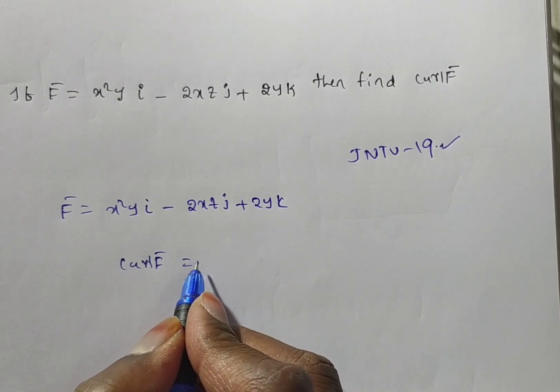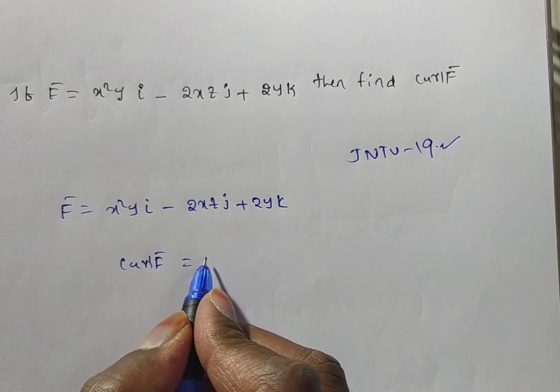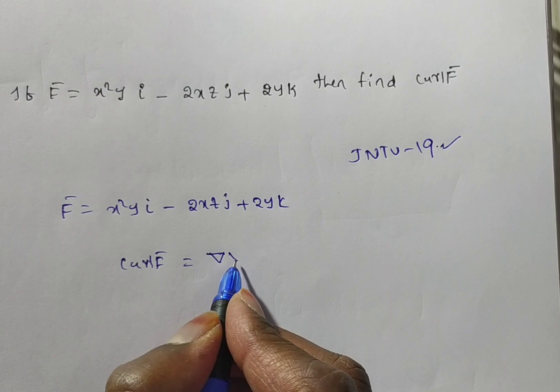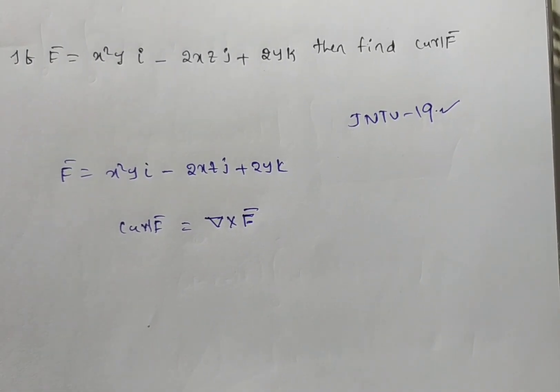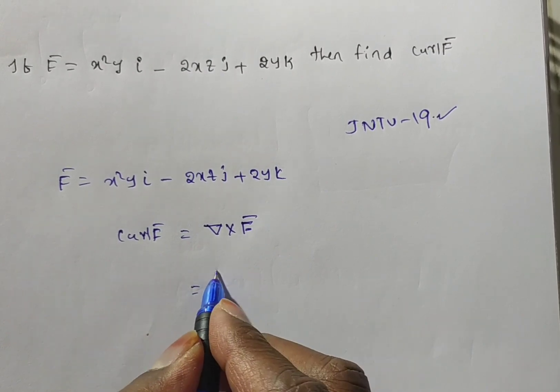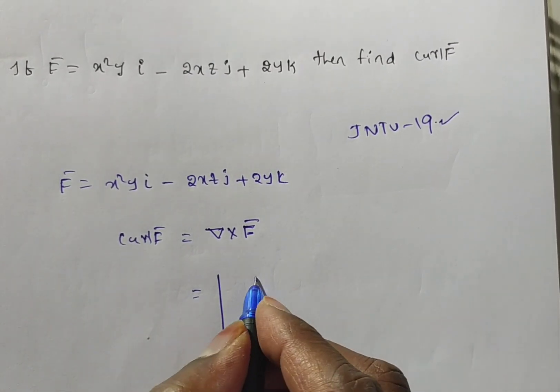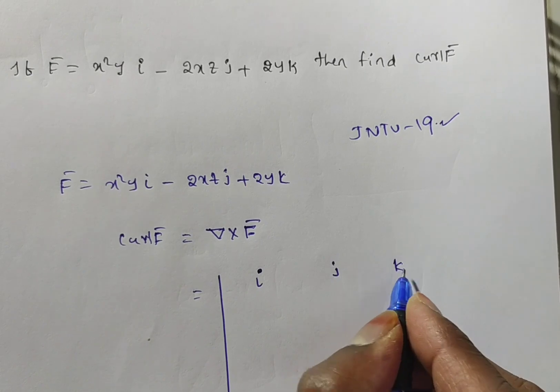What is meant by curl F bar? Curl F bar is nothing but cross product of the vector, that is del cross F bar. So you see del cross F bar we have a formula that is determinant of i j k.